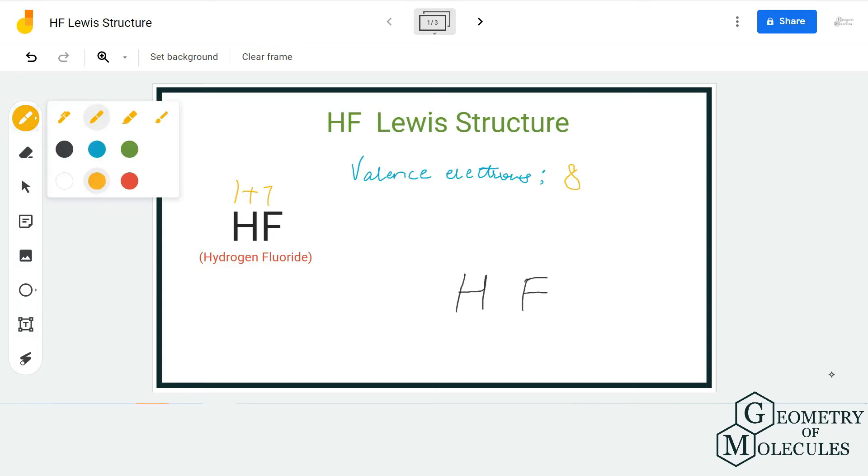Once we know the number of valence electrons, it becomes very easy to arrange these electrons and to check for bond formations. Here, hydrogen atom just requires two valence electrons to have a stable structure.